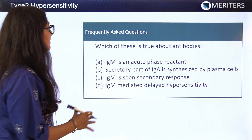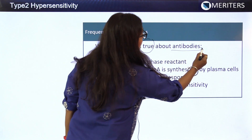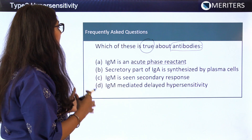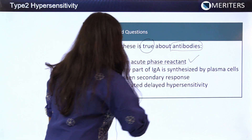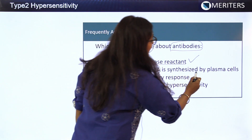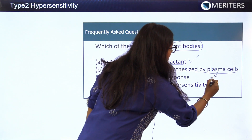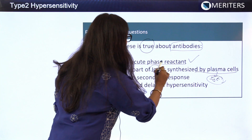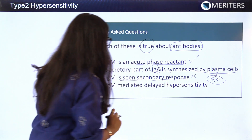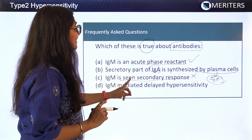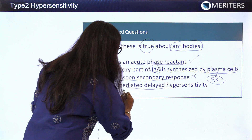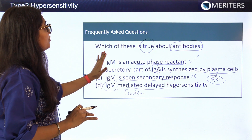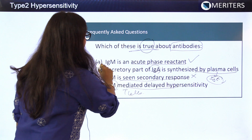A frequently asked question: which of the following is true about antibodies? Option 1: IgM is an acute phase reactant — correct, as IgM is formed on first exposure. Option 2: Secretory part of IgA is synthesized by plasma cells — wrong. Option 3: IgM is seen in secondary response — wrong, it is the primary acute phase reactant. Option 4: IgM mediates delayed hypersensitivity — wrong, T cells mediate delayed hypersensitivity. The answer is option 1.